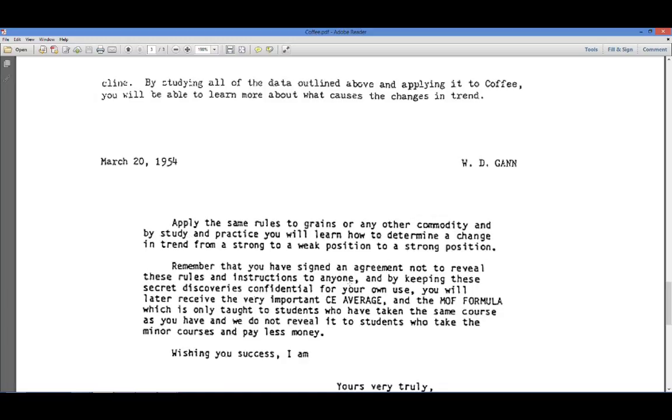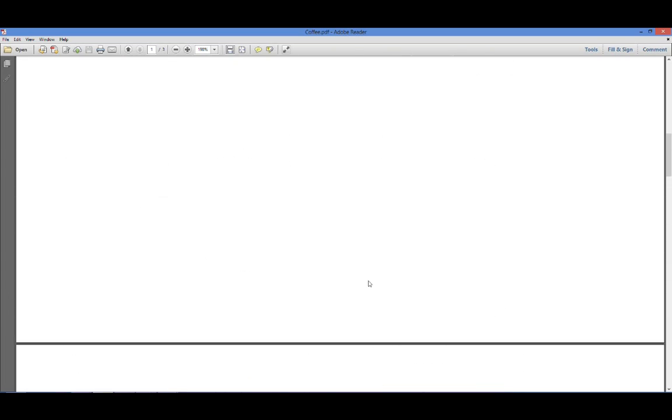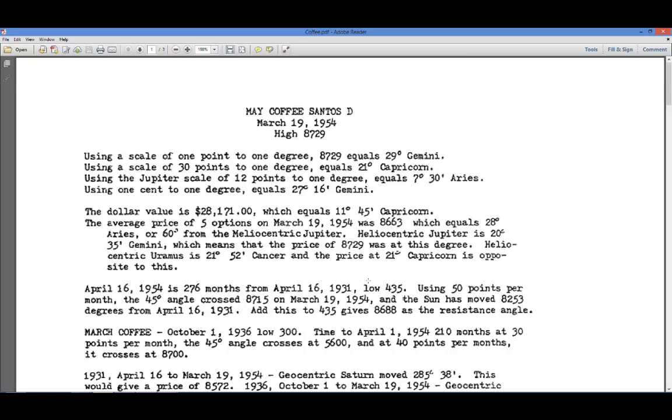And this is what he writes. Remember that you have signed an agreement not to reveal these rules and instructions to anyone. And by keeping these secret discoveries confidential for your own use, you will later receive the very important circle of eight average and the mean of five formula, which is only taught to students who have taken the same course as you and do not reveal it to students who take the minor courses and pay less money. Wishing you success. I am W.D. Gann. Now this is important.